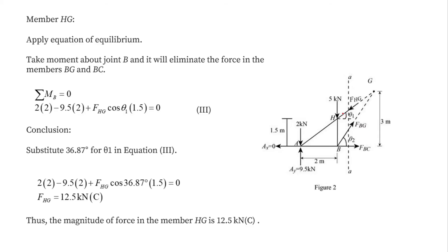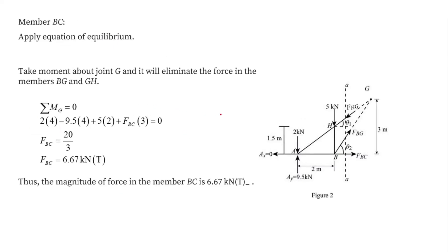Let's go to section HG and apply the condition of equilibrium. Taking the moment about point B equal to zero to find the force in HG: the 2 kN force at A acts downward giving an anti-clockwise moment of +2×2, the force Ay = 9.5 kN gives a clockwise moment of −9.5×2, plus the force FHG multiplied by its perpendicular distance. Solving, the force in HG comes out to be 12.5 kN and it is negative, so it is a compressive force.